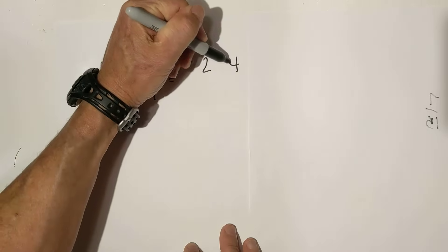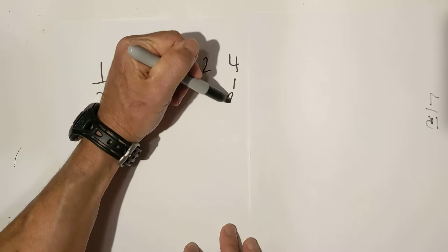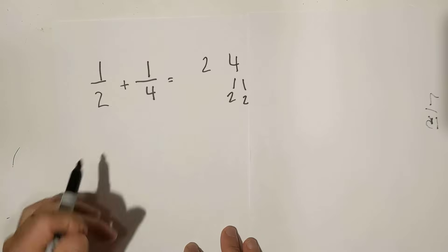I create a factor tree for each number. Two is prime, so I don't have to do anything there, and two times two is four.